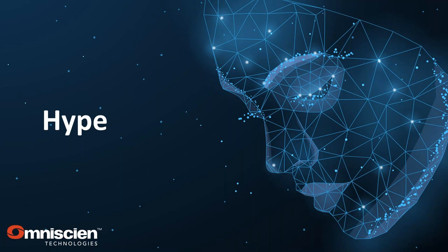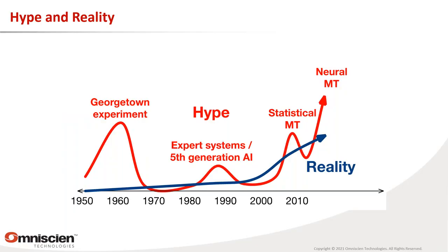With any new technology there seems to be unavoidable hype — whenever something new comes around, people feel like everything has been solved. Machine translation is well experienced in going through these hype cycles. The popular perception of a technology over time versus the reality tend to diverge significantly.